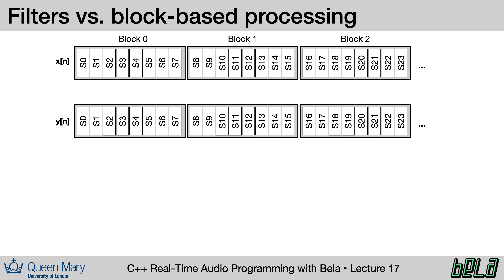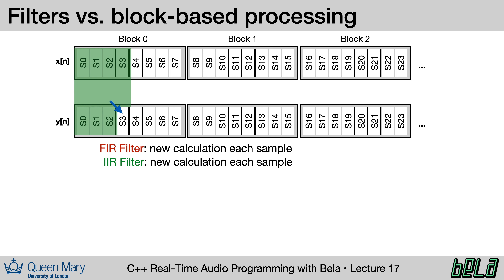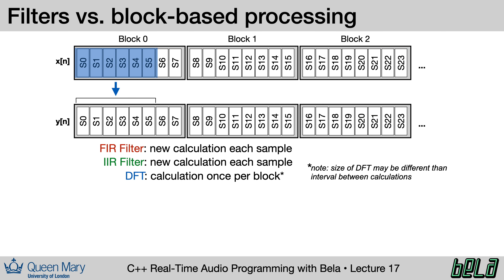What we're ultimately interested in is how to build a practical system that does this block-based transformation in real time. It's useful to contrast this from what we've seen with filters. The FIR filter takes current and previous values of the audio input to calculate the current output, and a new output is calculated each successive audio sample — so our FIR filtering code has to run once for each audio frame. The same applies to the IIR filter. The difference with block-based processing is that we're only going to run the calculation once per block, say every six samples. We wait until all six samples are available, run the calculation, then repeat.